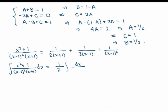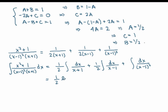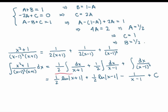The first integral is one half times the integral of 1 over x plus 1. The second is one half times the integral of 1 over x minus 1. The third is the integral of 1 over x minus 1 squared. All of these are straightforward: the first two give logarithms, and integrating x minus 1 to the minus 2 gives x minus 1 to the minus 1 over minus 1, so basically minus 1 over x minus 1, plus C. That is the final answer.